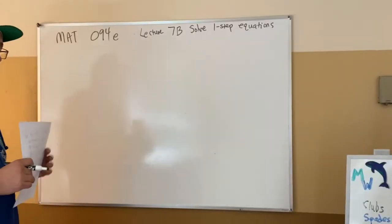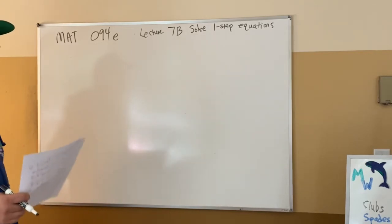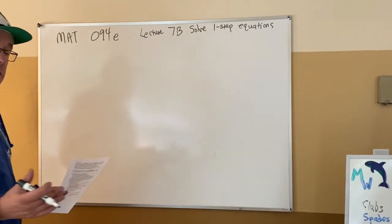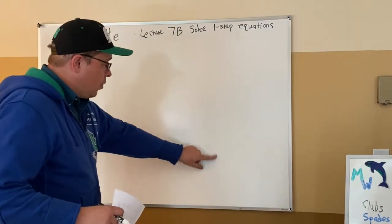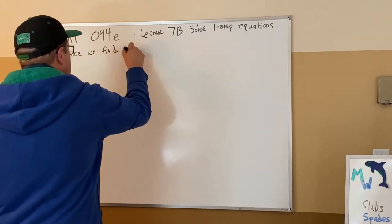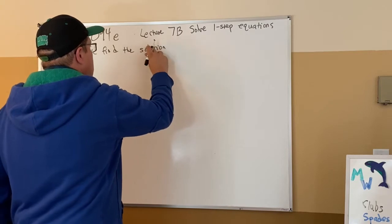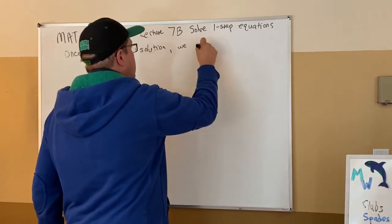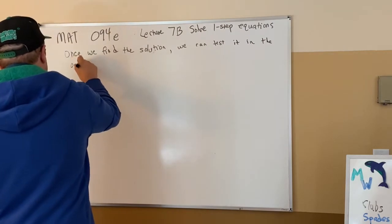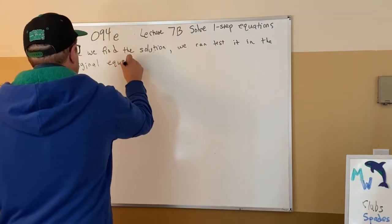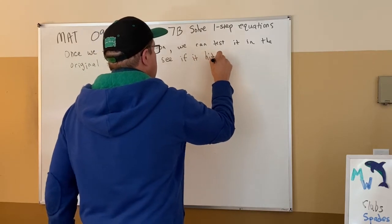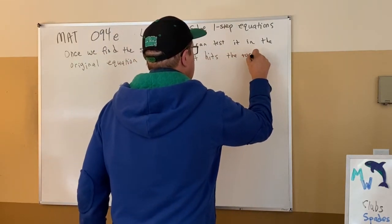We're going to look at one-step equations, which means they're one step away from knowing the solution because there's one thing standing in front of them or blocking their way. The magic number is the solution to an equation, and we want to find the right number that makes the equation work out. Once we find the solution, we can test it in the original equation to see if it hits the target value.